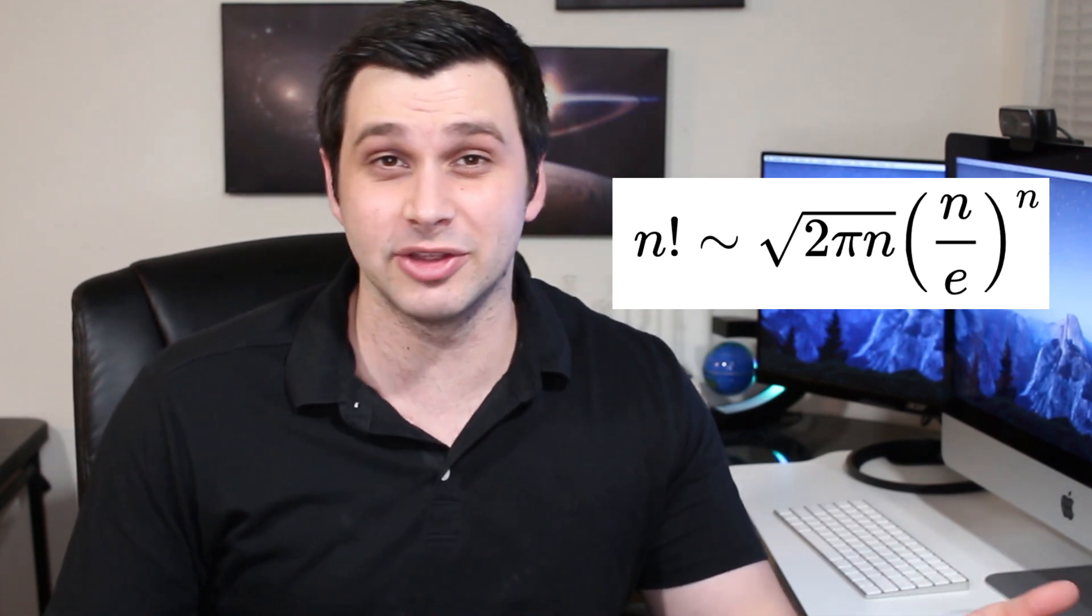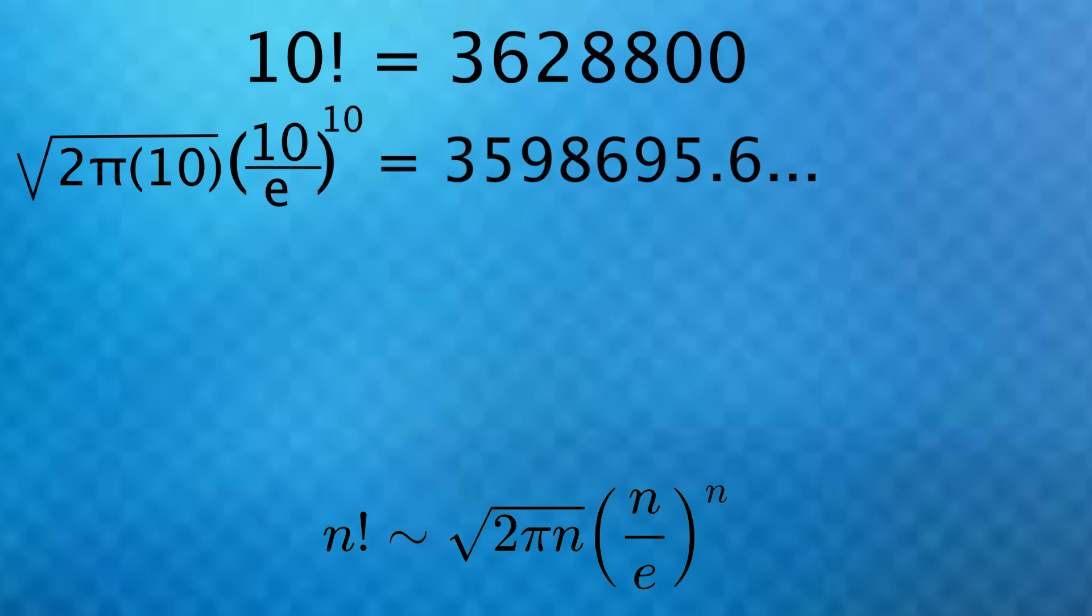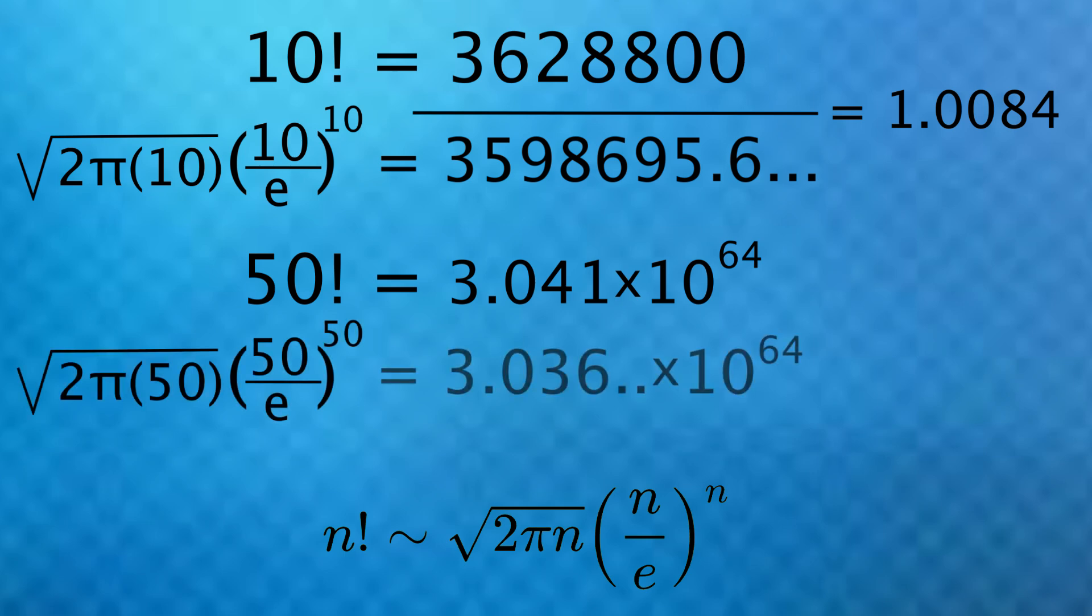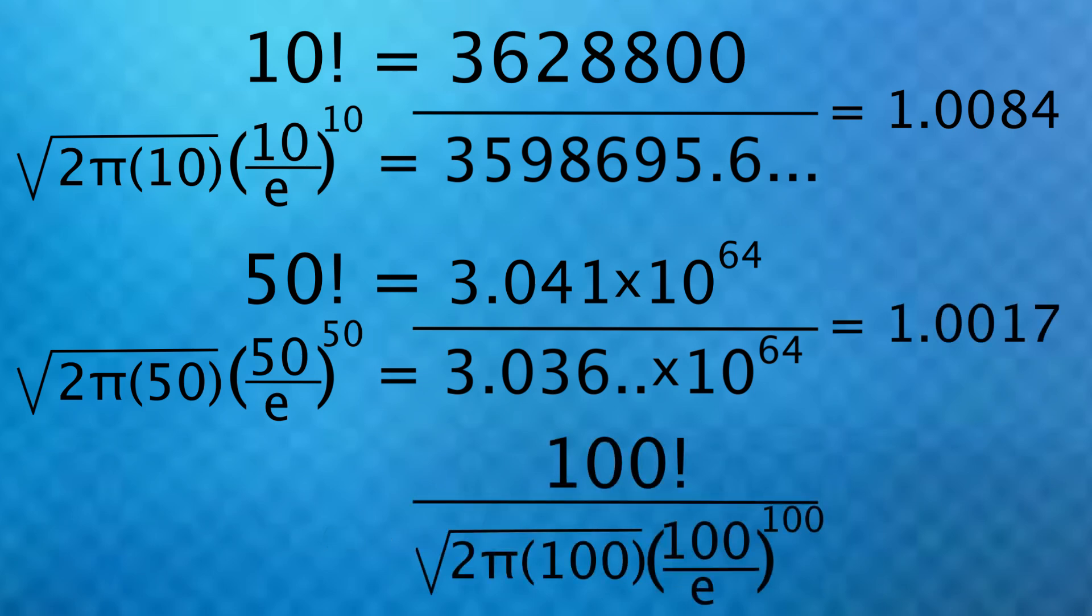In fact, when n is 10, the formula is already really accurate. This is 10 factorial, and when we plug 10 into Stirling's approximation, we get this. These two values are very close as the ratio of the two numbers is just over 1.008. 50 factorial is about 3.04 times 10 to the 64th, while the approximation yields 3.036 times 10 to the 64th. The ratio of these is just over 1.001. And when n is 100, the ratio is this.